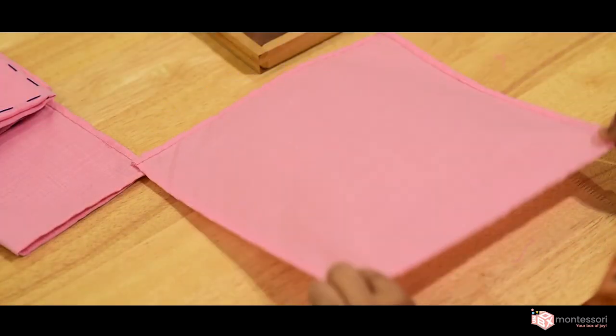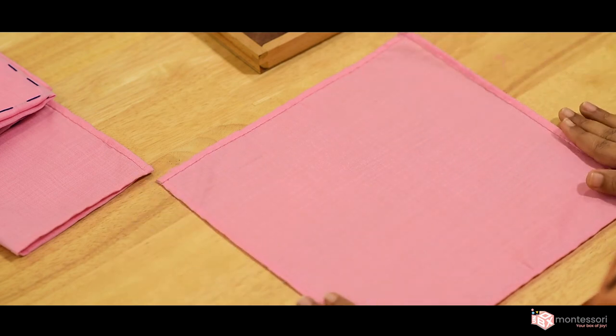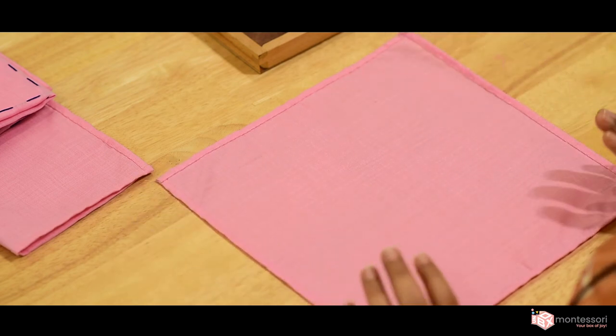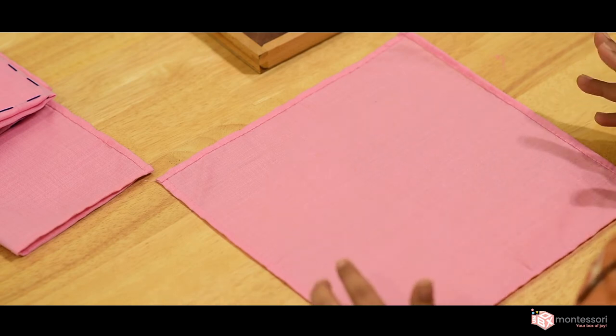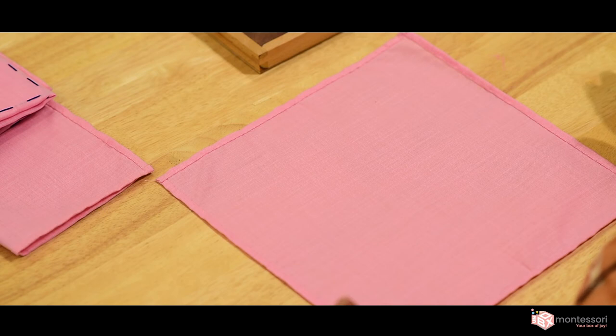The last napkin has no lines. Basically, this is for the child to do his own learning pattern, whatever pattern he wants to do, his own creativity, his own logical thinking.